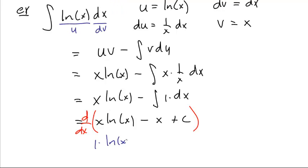One times the natural log of x left alone plus the x left alone times the derivative of the log, which is one over x minus the derivative of negative x is negative one and the derivative of c is zero.